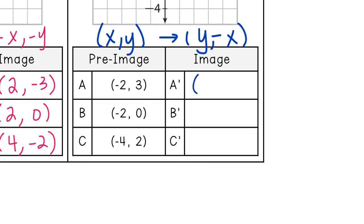So this one would turn into (3, 2). Notice here how we switch places. The 3 was the second number, but it's now the first number. -2 was the first number, but now it's the second number. But because of this negative, a negative negative turns it to positive. B prime should be at (0, 2). And C prime should be at (2, 4).